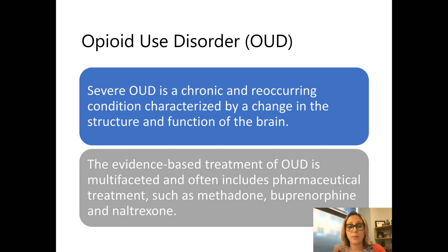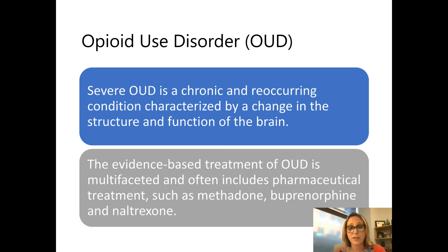We consider opioid use disorder a chronic condition, the same way we think of asthma, diabetes, or high blood pressure. We want evidence-based treatment that includes behavioral aspects, environmental supports, as well as pharmaceutical treatment, which might be methadone, buprenorphine, or naltrexone.